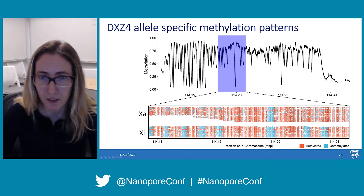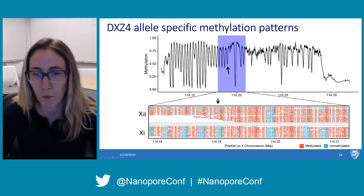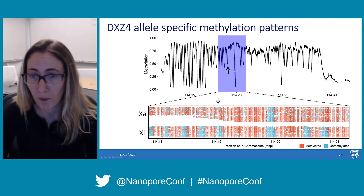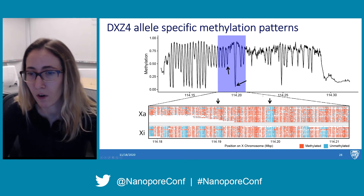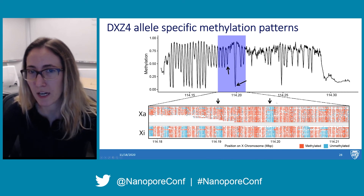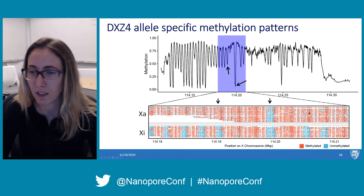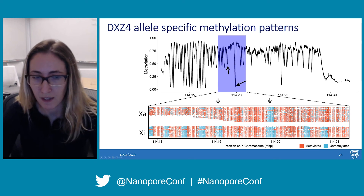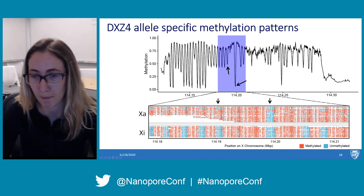We can see the active X allele where all promoter regions are hypermethylated, and the inactive X allele where all promoter regions are hypomethylated. We can phase these reads based on methylation state alone without using any SNPs or sequence differences. We also see regions with a methylation frequency of 0 where both alleles are entirely hypomethylated — this is heterogeneity within the array that has never previously been probed. It was previously thought that the active X allele is entirely hypermethylated and the inactive X is hypomethylated, but we see regions where both alleles share the same methylation state.